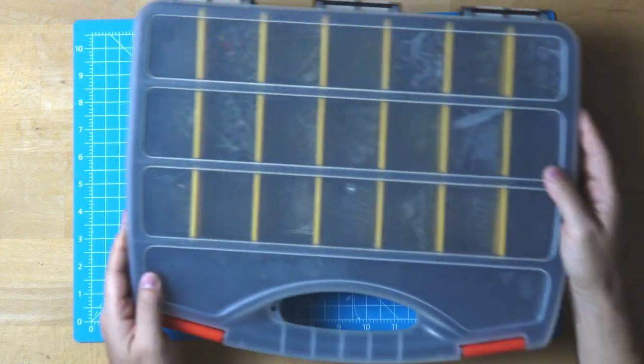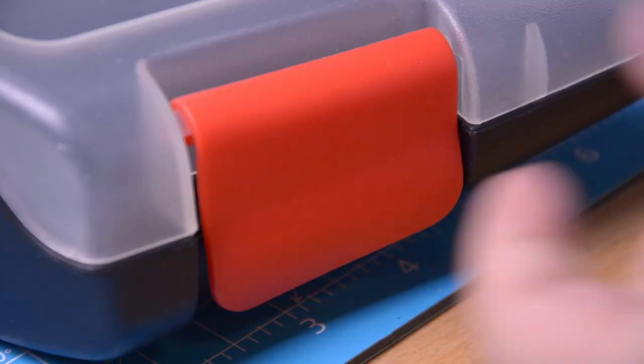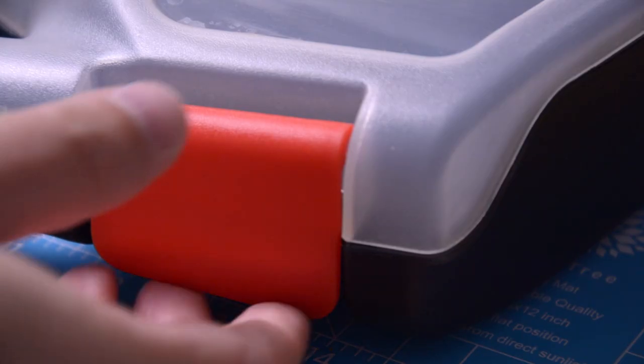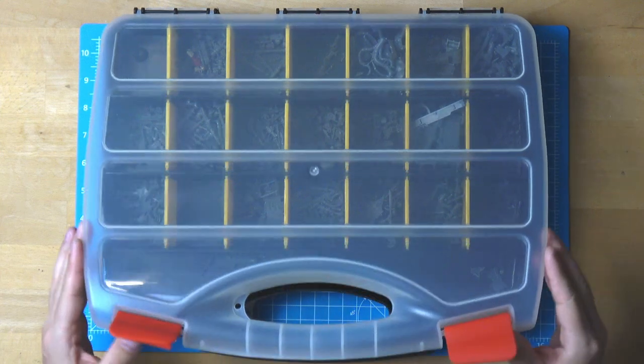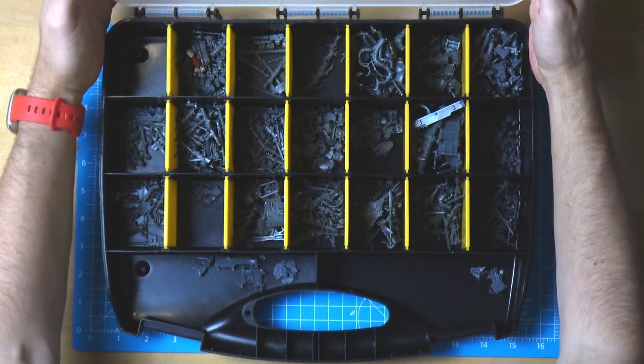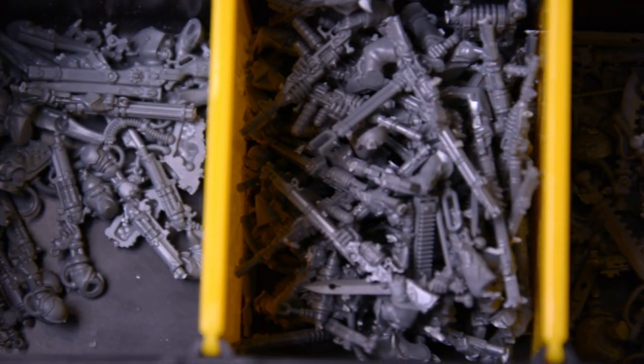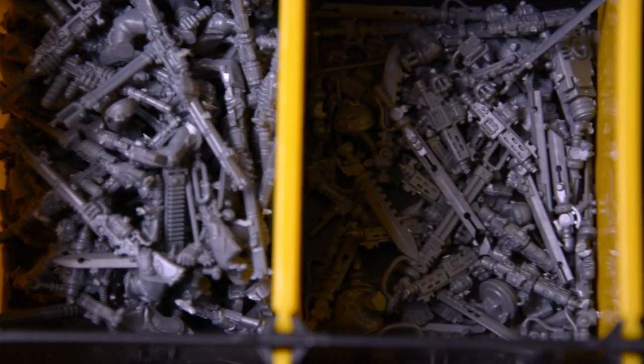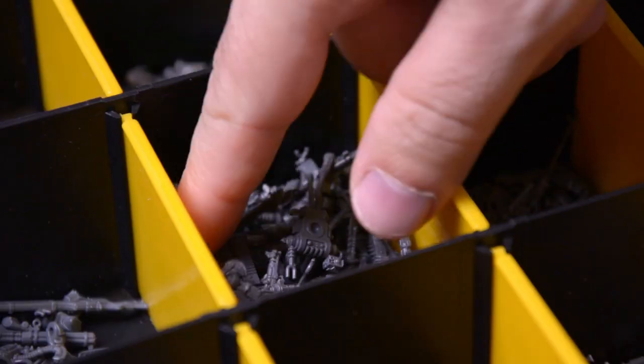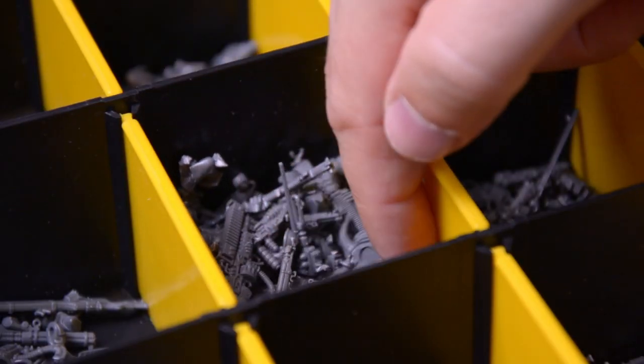I usually start with an idea for a mini I'd like to make, or sometimes I just have a cool bit that I want to use. I start by rummaging through my sprues and bit boxes. Among other things, I play Orcs and Adeptus Mechanicus, which are both good factions for conversion bits. I'll just grab anything that might work for the time being. I'll figure out how they go together along the way.